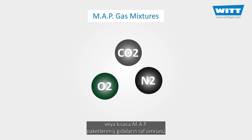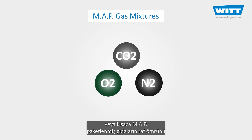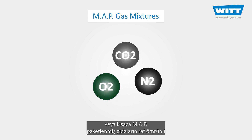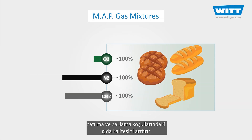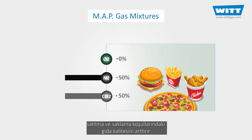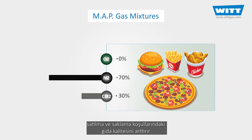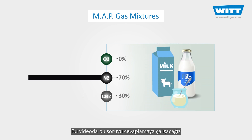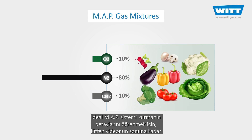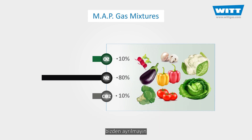Modified Atmosphere Packaging, or MAP for short, increases a food's shelf life and saleability, as well as maintaining the food quality during its storage period. But how do we achieve optimal MAP? This is what we aim to answer in this video, so please stay with us to the end to find out more about the details and equipment for an ideal MAP system.